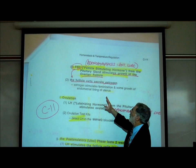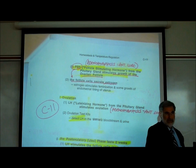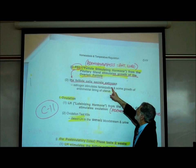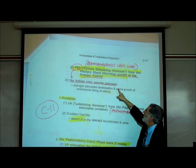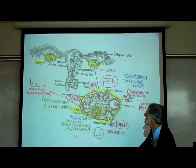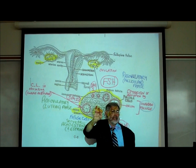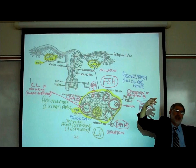Names mean something — Follicle Stimulating Hormone stimulates the growth of an ovarian follicle. FSH also stimulates those follicle cells to secrete estrogen. Technically, these ovarian follicles are called primary follicles; they mature into secondary follicles and then into Graafian follicles. Each month in most women, FSH will cause just one ovarian follicle to develop.